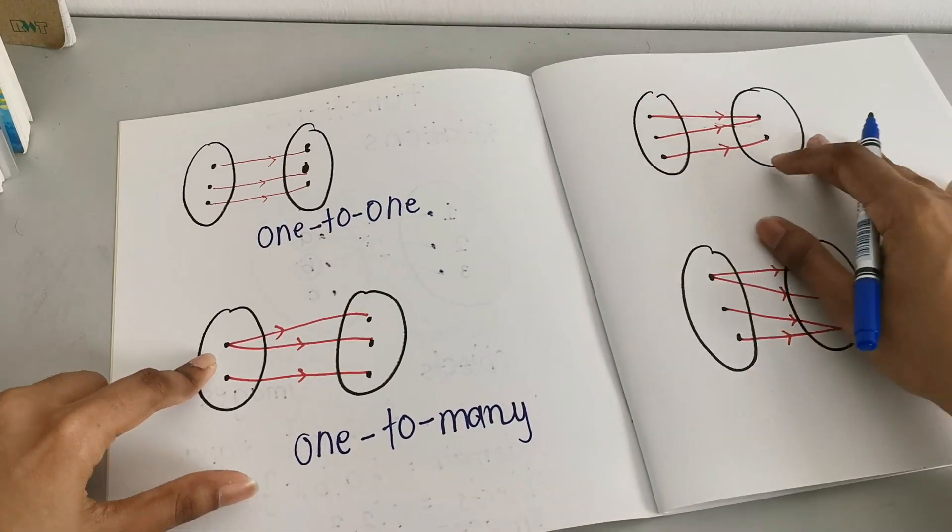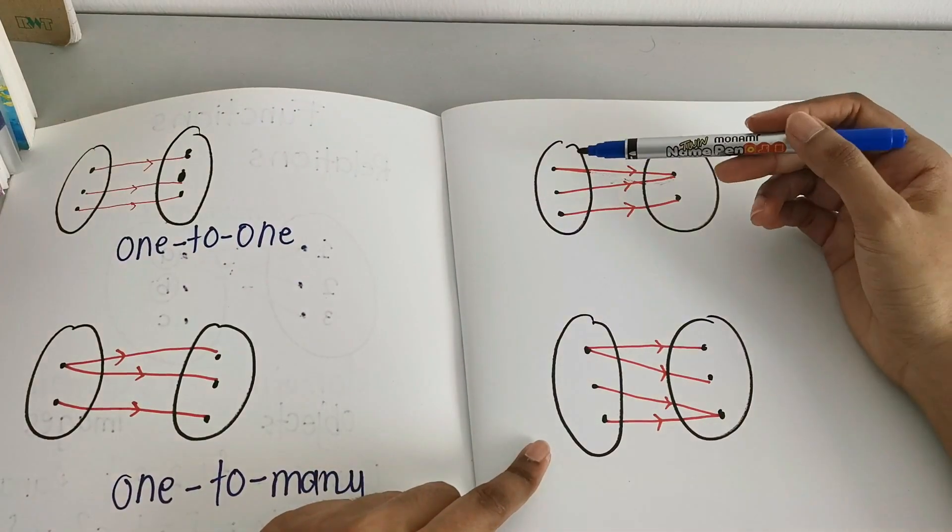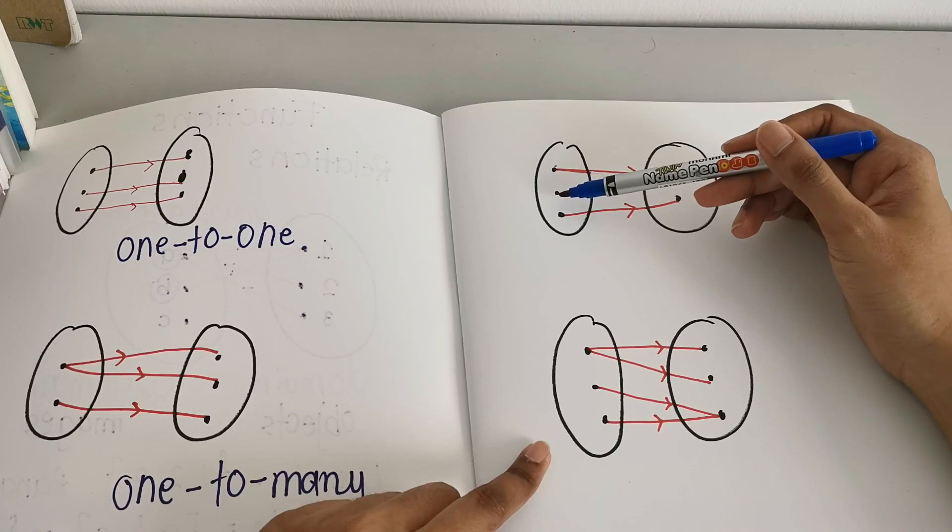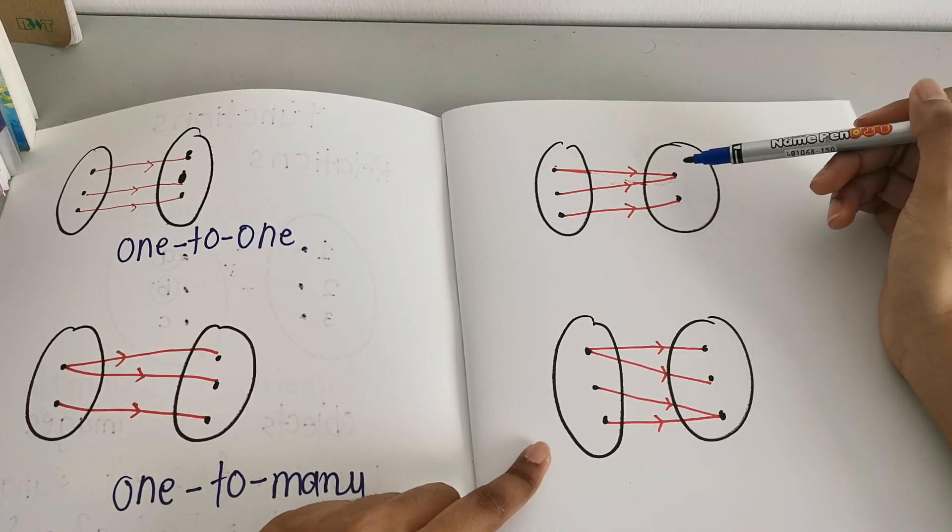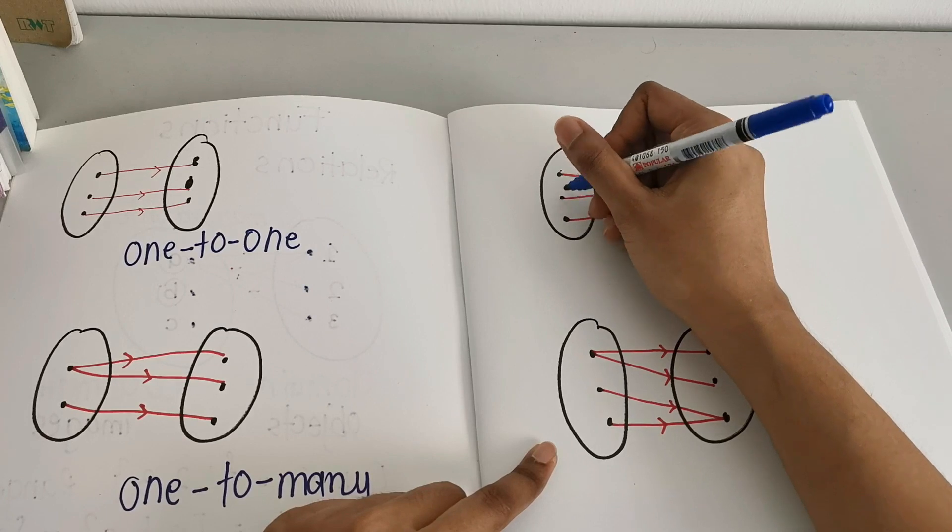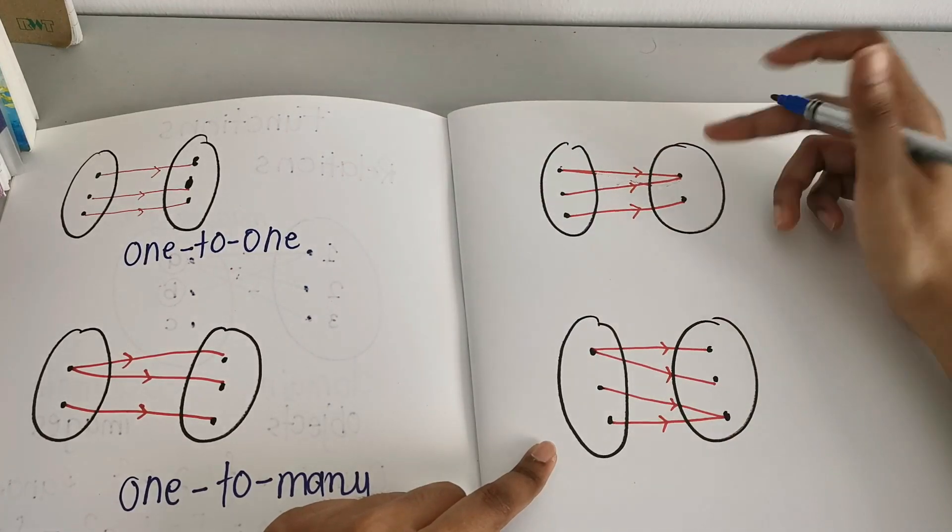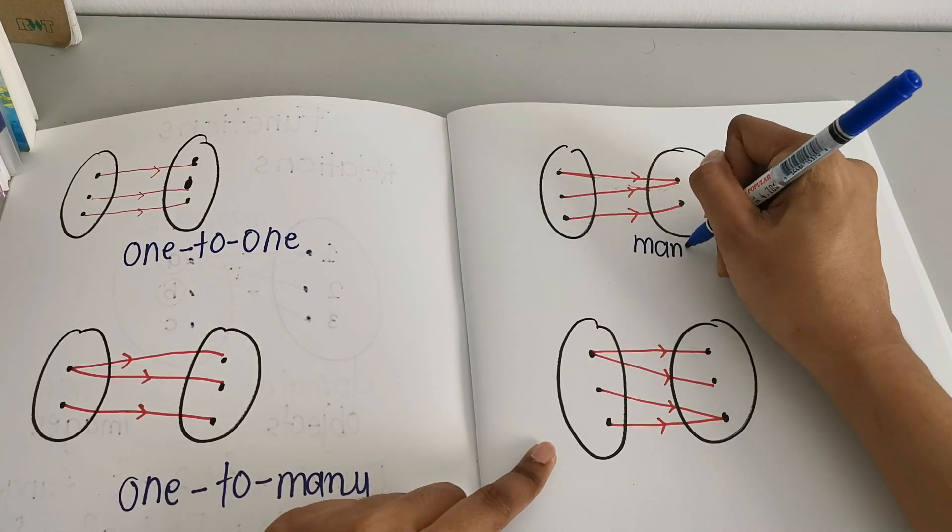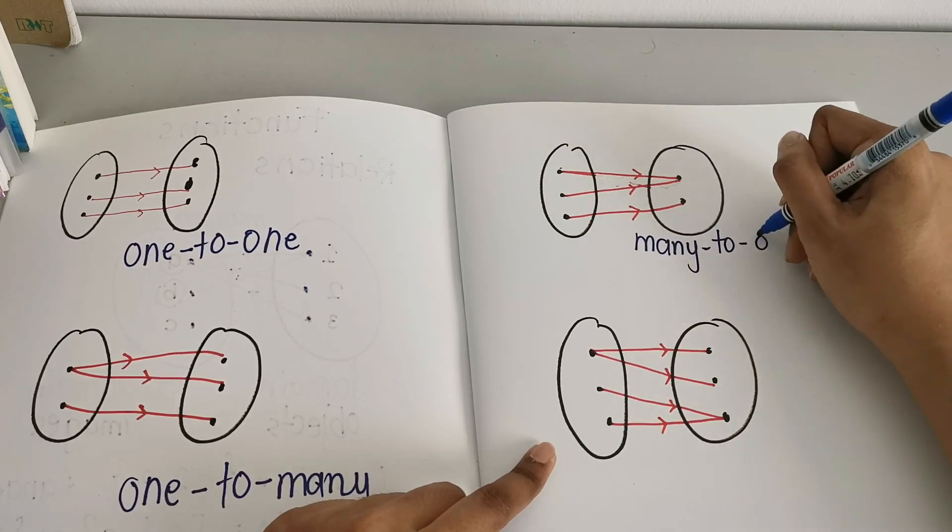So this one will be, as you can see, 2 objects, both are mapped to 1 image. So here, many, here 1. So this is many to 1 relation.